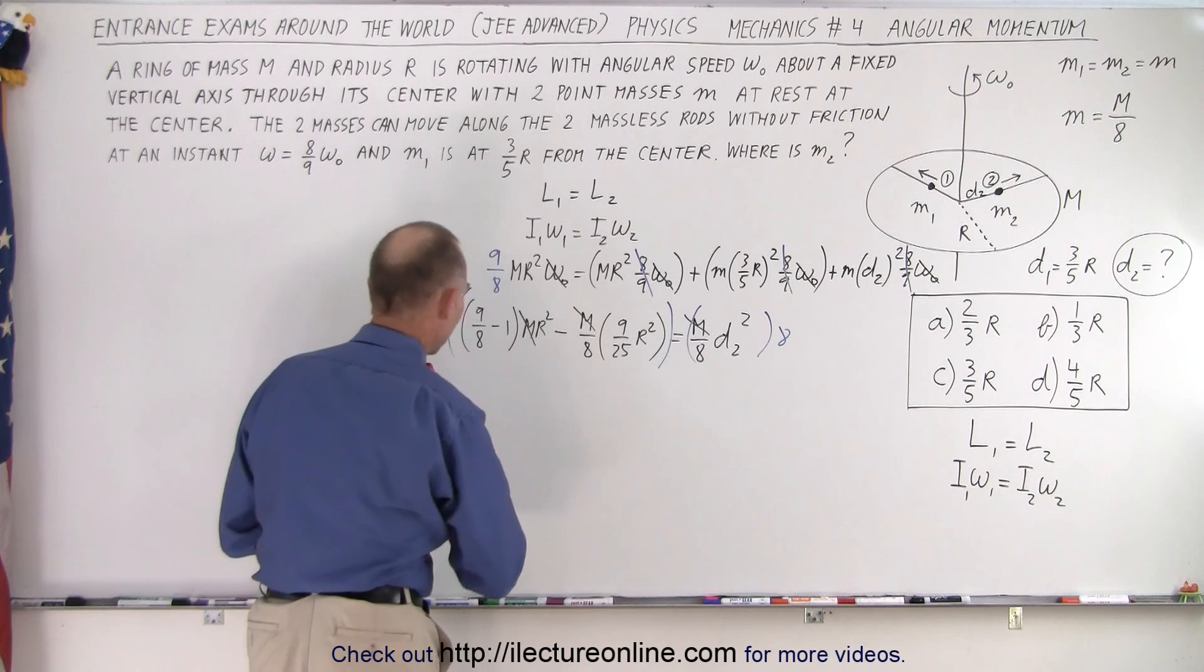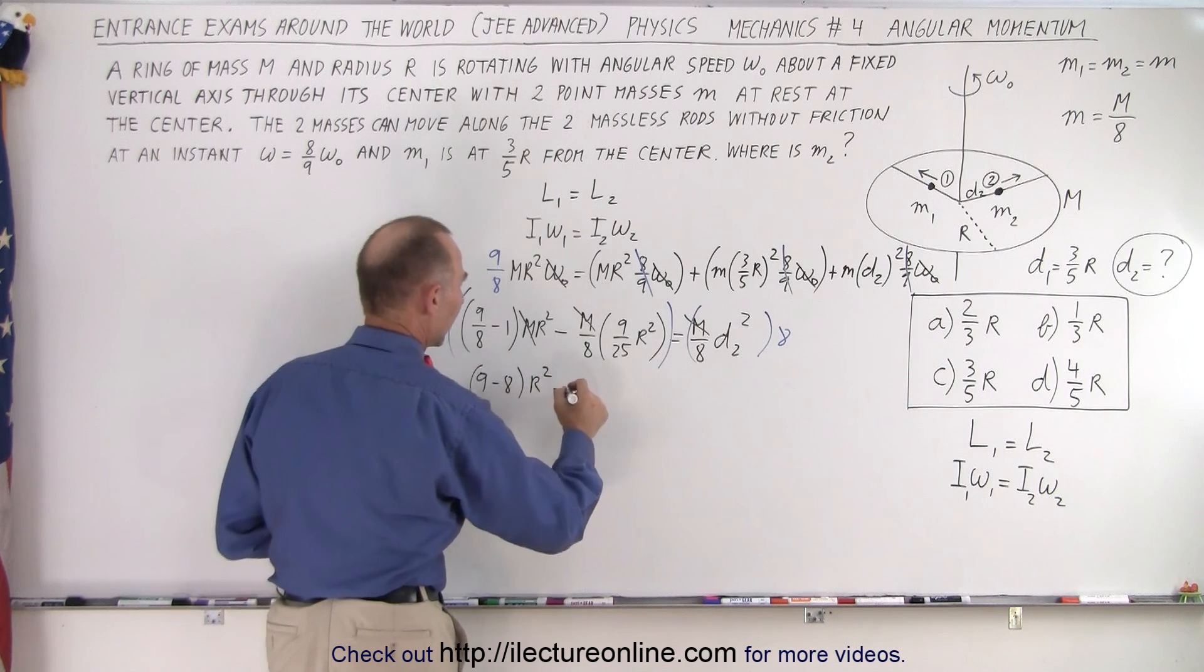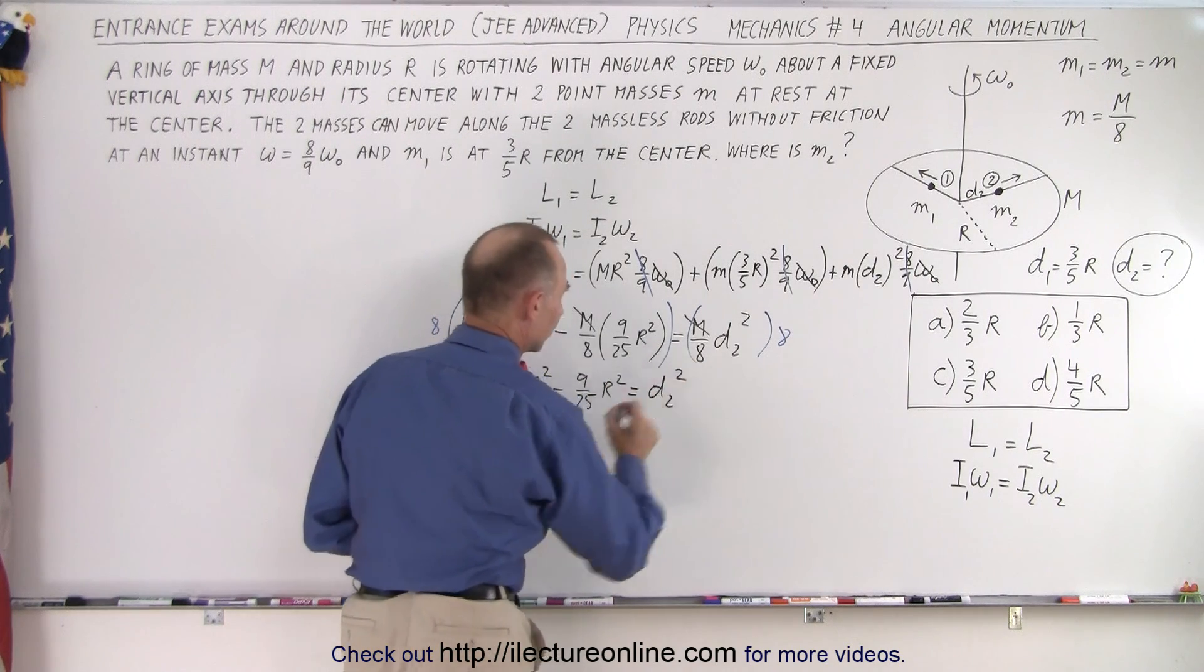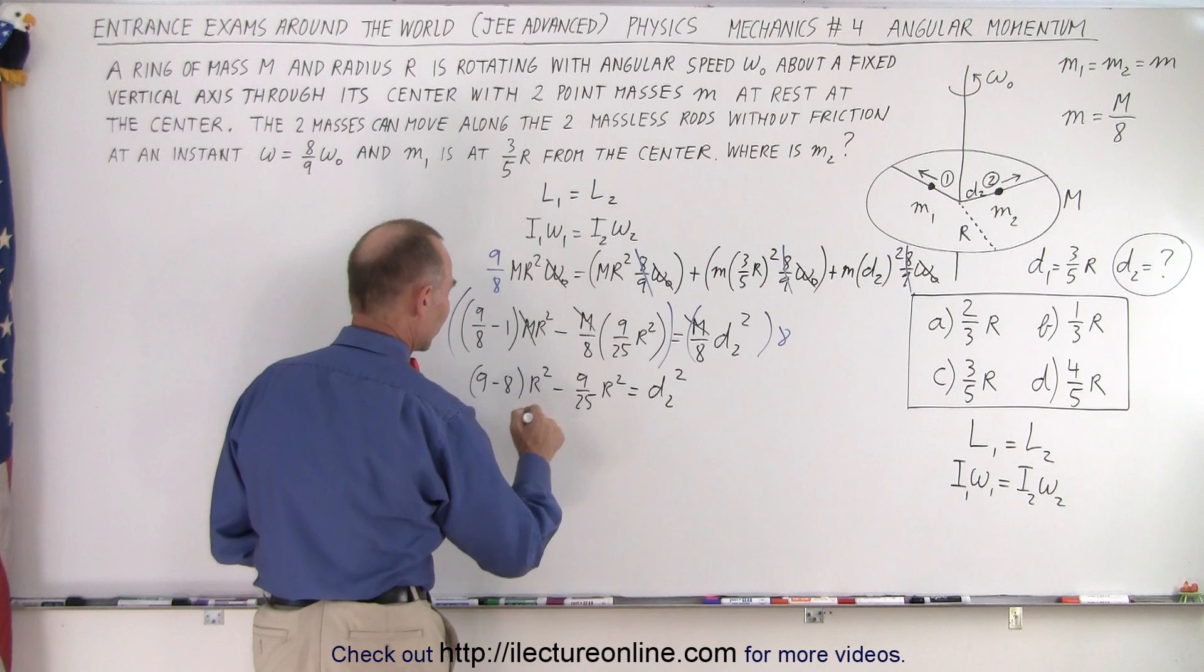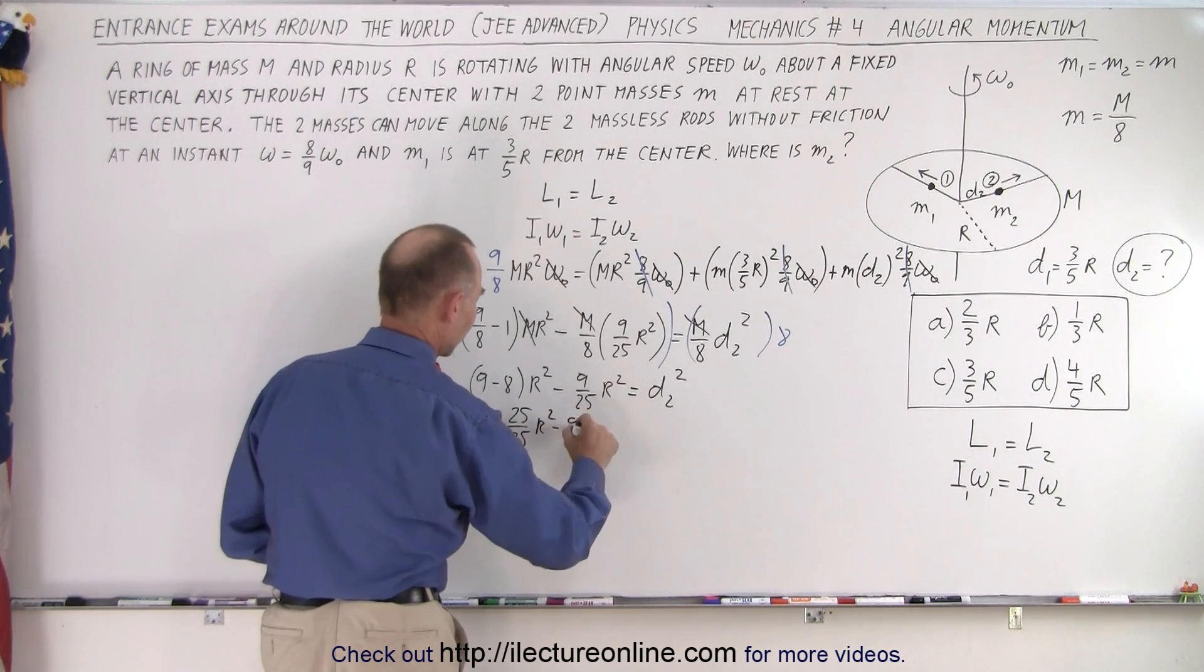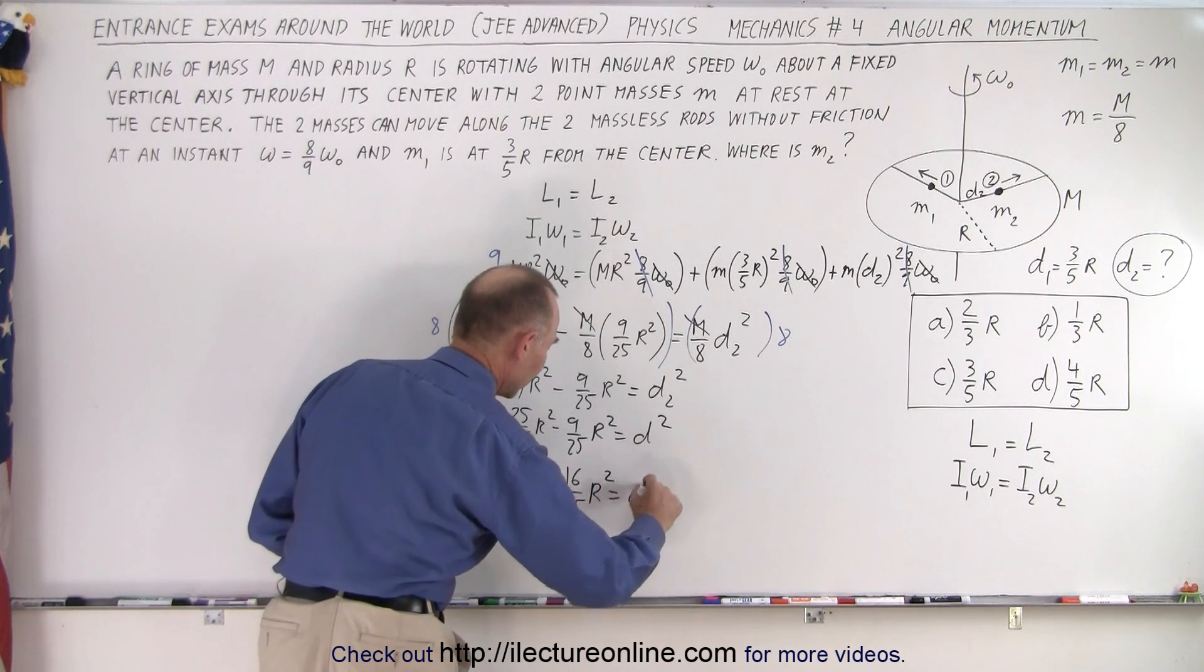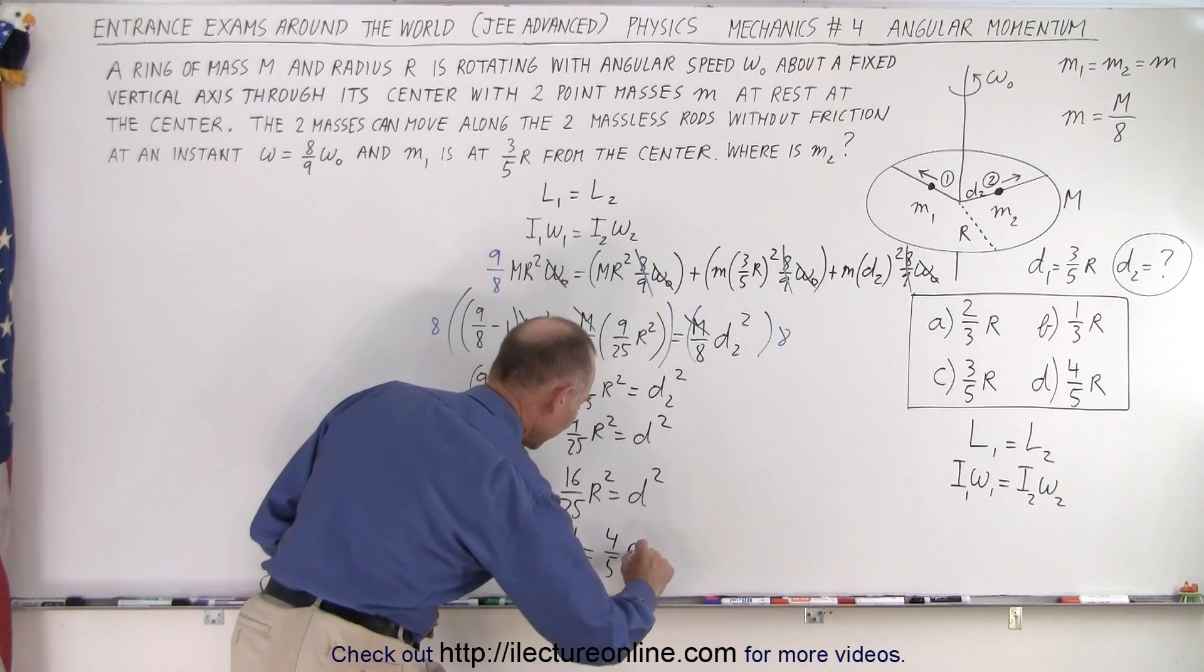Then what I have is nine minus eight, nine minus eight times r squared minus, the eight goes away, nine over twenty-five r squared equals, the eight goes away, and that would be d2 squared. So here we have one r squared minus nine over twenty-five r squared, or twenty-five over twenty-five r squared minus nine over twenty-five r squared equals d squared. So this becomes sixteen over twenty-five r squared equals d squared. So finally, d is equal to the square root of that, which would be four-fifths times r.